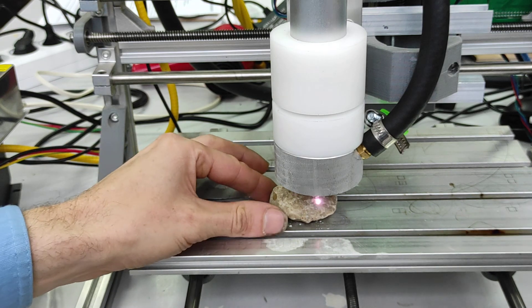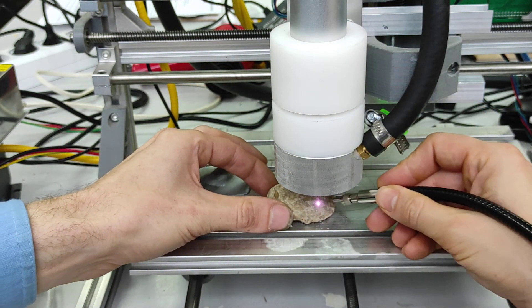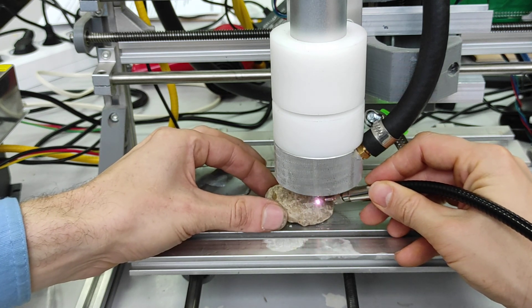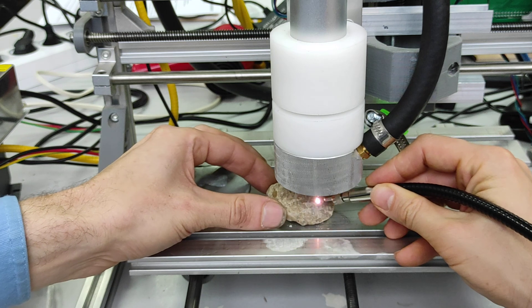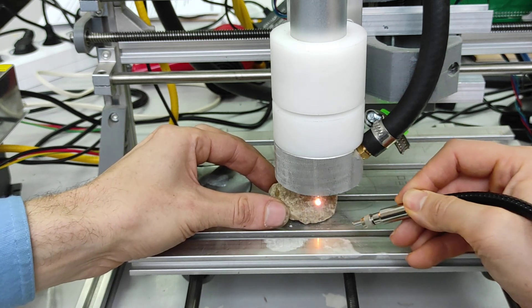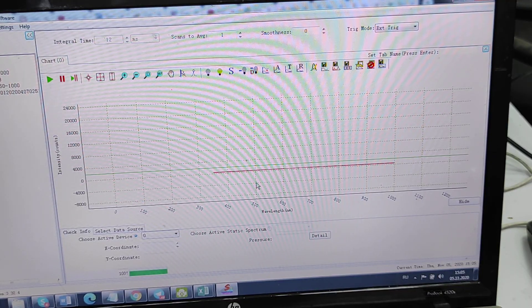So we also can analyze different types of rock using the same method. We're just getting plasma. Let's see what we got on screen. Okay, so that's what you can see here.